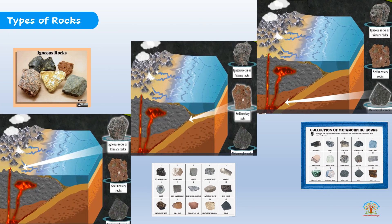Before beginning with the types of rocks, let us see how many types of rocks there actually are. There are mainly three types of rocks: igneous rocks, sedimentary rocks, and metamorphic rocks. Looking at the diagram here, volcanic eruption is shown below the earth's surface - the top portion formation is igneous rocks, the middle portion is sedimentary rocks, and the formation inside the magma under heavy pressure is metamorphic rocks. We will learn about each type in the upcoming slides.